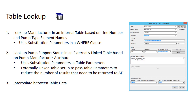In the first example, we'll look up the manufacturer of a pump from an internal table based on the line number and pump type. We'll use substitution parameters in a WHERE clause to accomplish this.